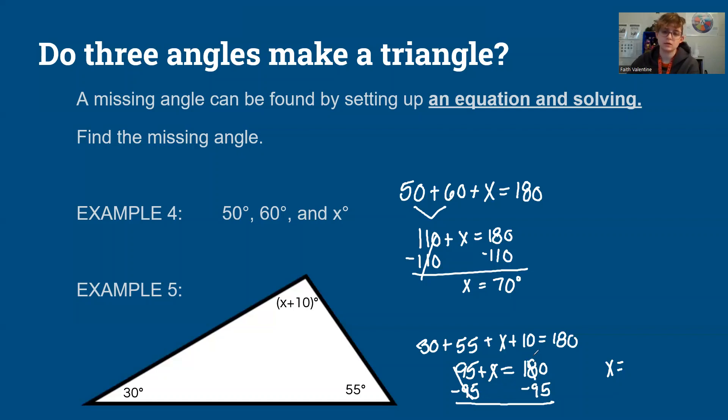So x equals 180 minus 95. This is going to cancel, so I can't do that. So I'm going to borrow. Make my 8 a 7, my 0 into a 10. 10 minus 5 is 5. 17 minus 9 is 8. So I get that x equals 85.